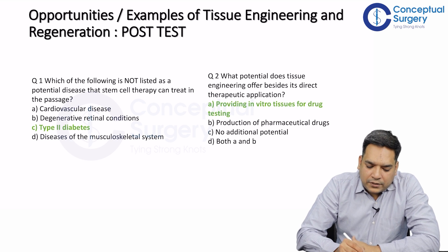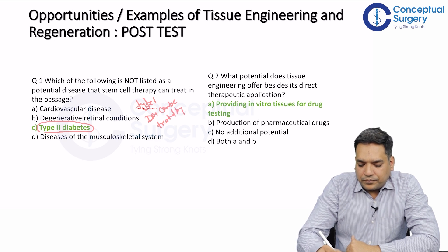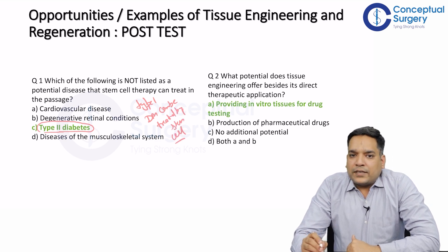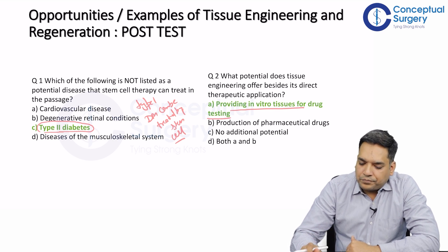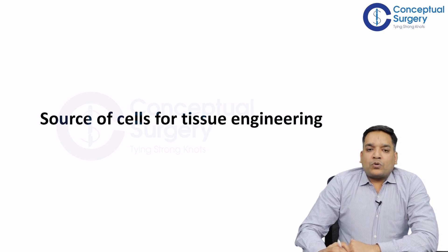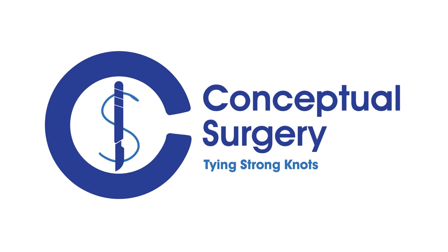The answer to question one is type 2 diabetes mellitus — type 2 diabetes mellitus cannot be treated by stem cell therapy. Type 1 diabetes mellitus can be treated by stem cell therapy, not type 2. The answer to question two: tissue engineering offers the potential to provide in vitro tissue for drug and device testing, which is very important. The next important topic is the source of cells for tissue engineering.